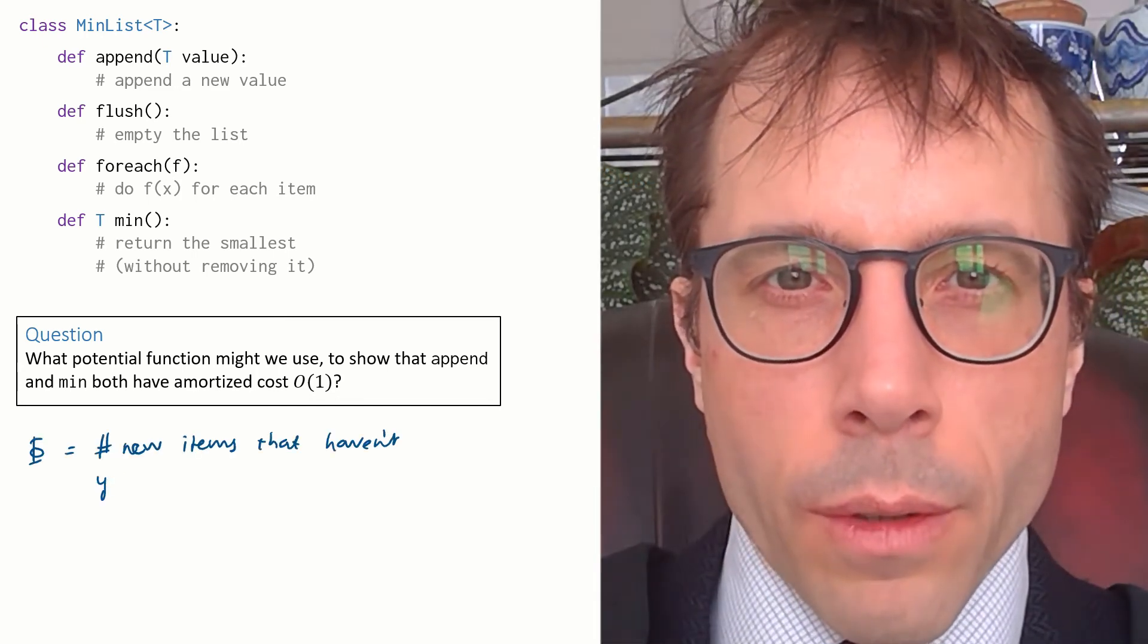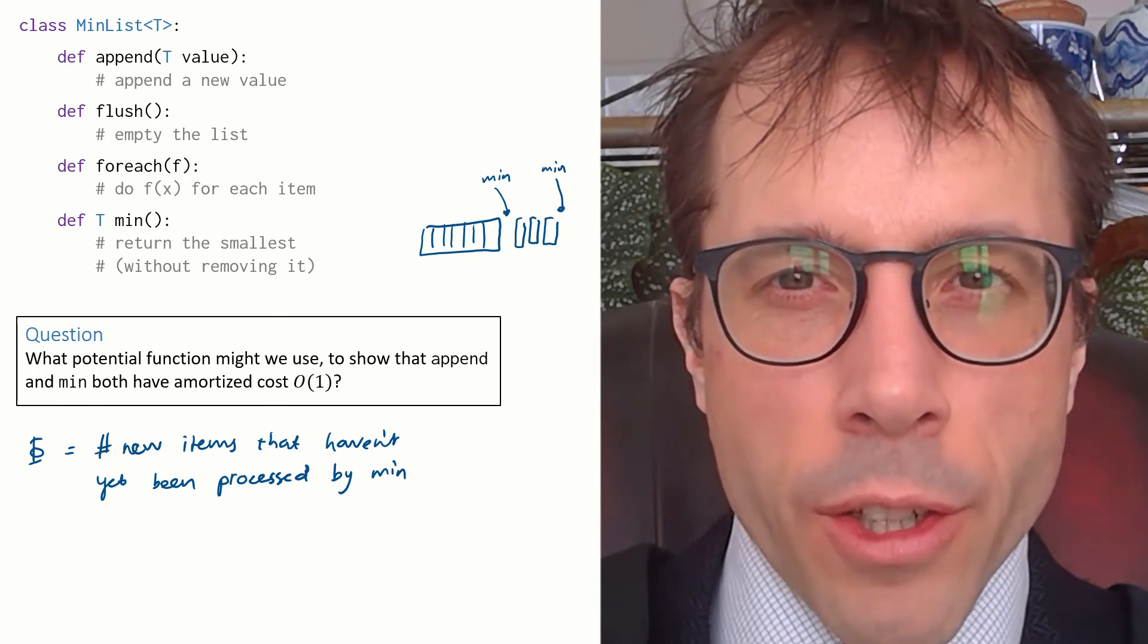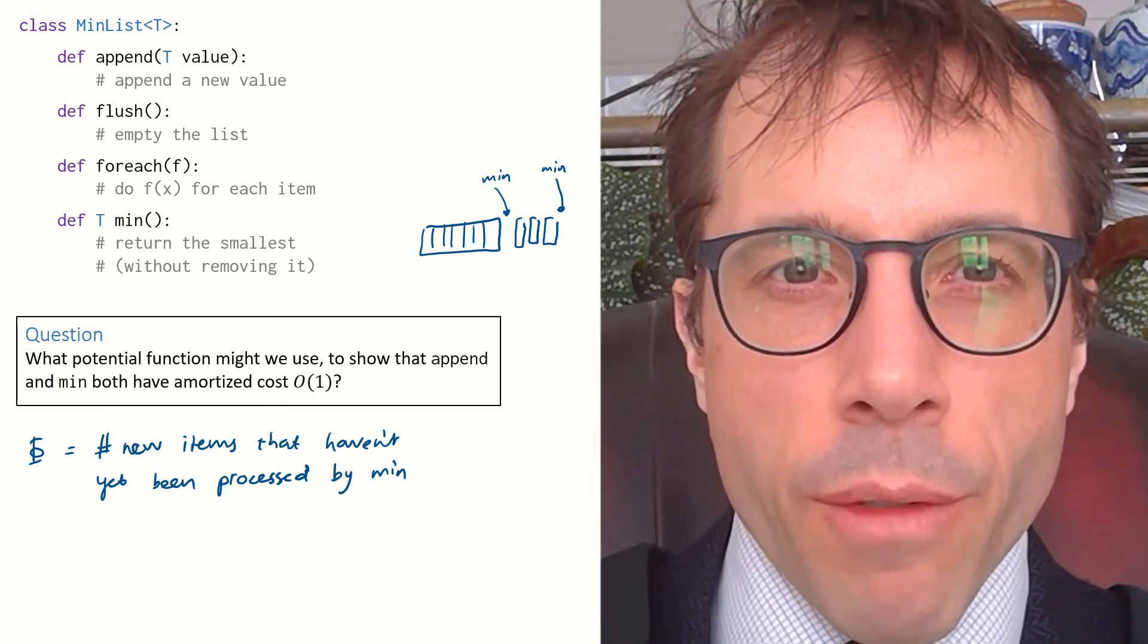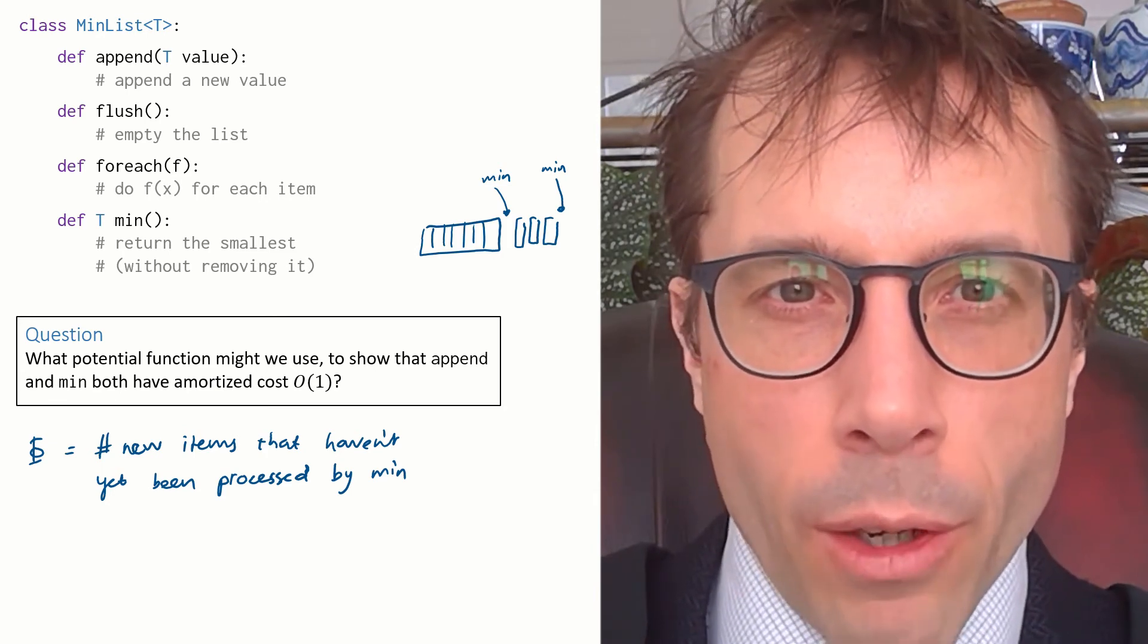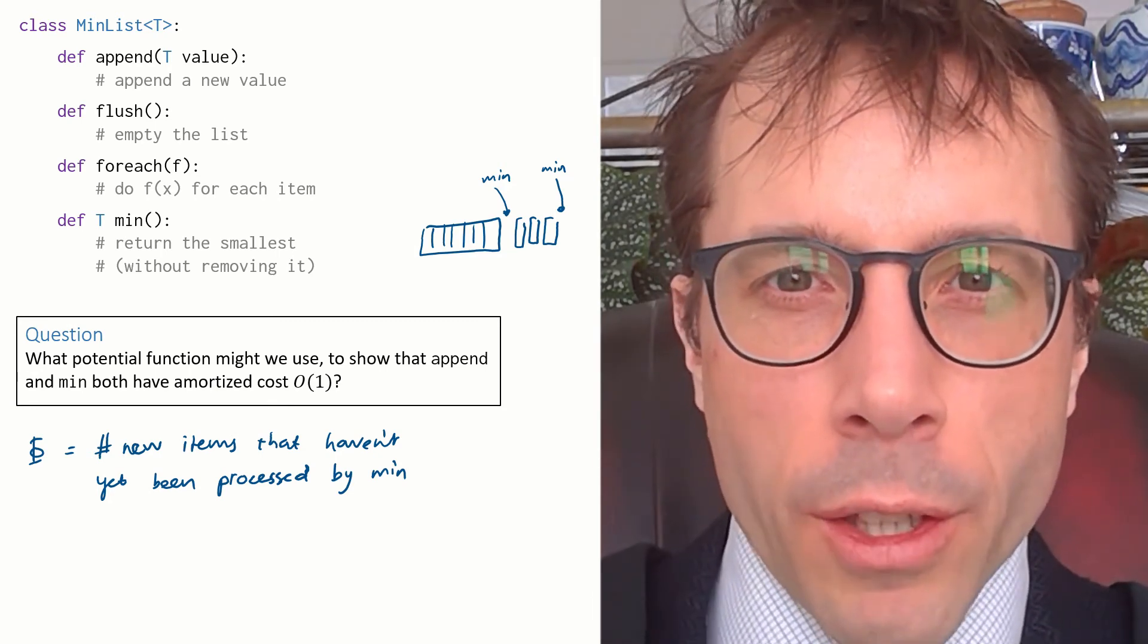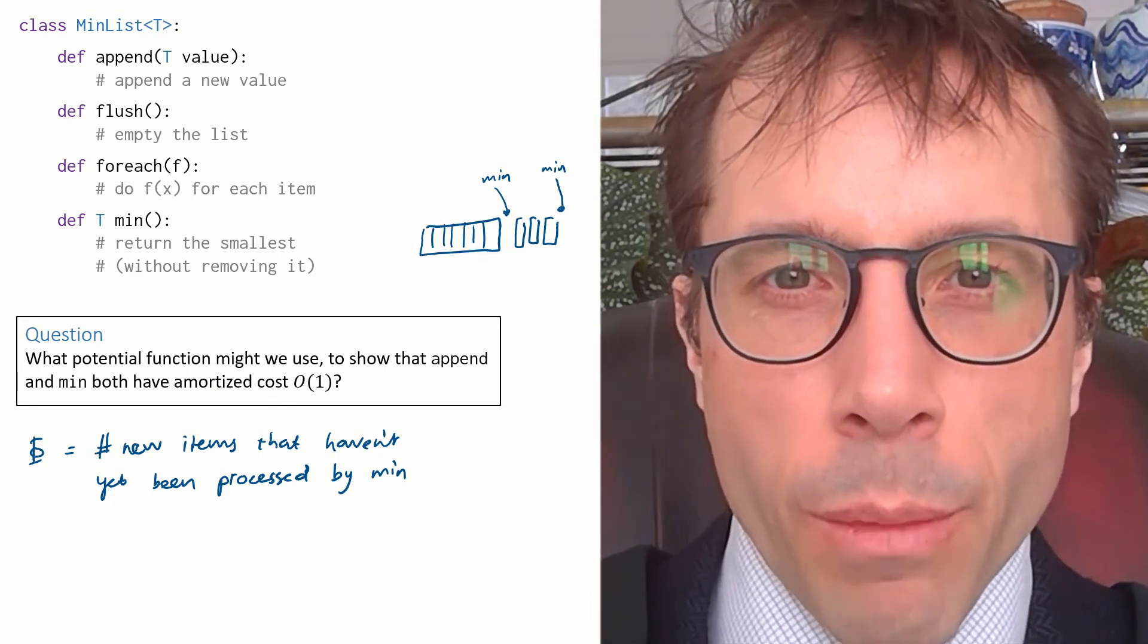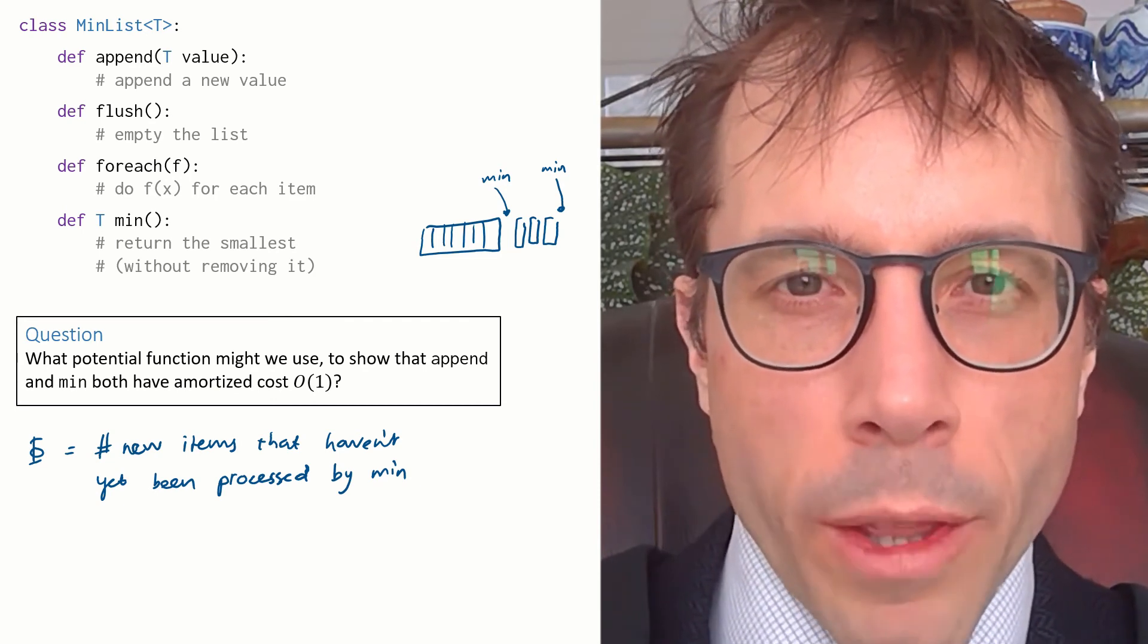Here's the obvious choice. We'll let phi be the number of items at the tail of the list that haven't yet been processed by min. This fits in with our idea of phi as measuring messiness. There's a bunch of work that we're storing up for ourselves, namely the work of comparing each item that we've appended, so we'd better put some money in the bank to pay for that work when the bill comes due.